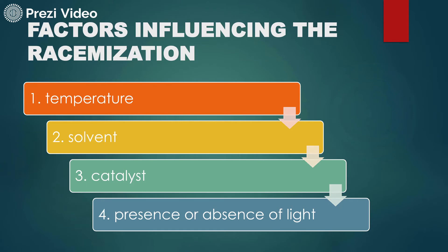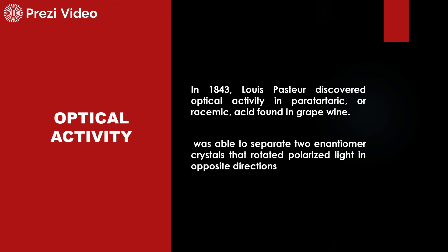Now let us understand the factors which influence the racemization process. The racemization process is influenced by a number of factors, including changes in temperature, changes in the solvent system, the presence of a catalyst, and even the presence or absence of light — since the compound is optically active. The mixture formed during racemization is known as the racemate. Optical activity was first noticed by Louis Pasteur in 1843, when he discovered it in paratartaric or racemic acid found in grapevine.